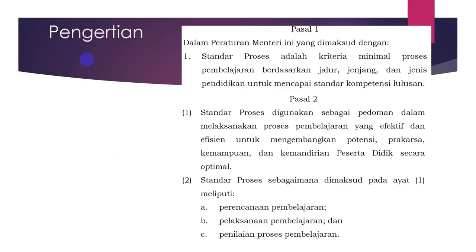Kita awali dengan pengertian. Apa pengertian standar proses? Yaitu kriteria minimal proses pembelajaran yang berdasarkan jalur, jenjang, dan jenis untuk mencapai standar kompetensi lulusan. Yang namanya standar itu pasti kriteria minimal, karena minimal itu berarti boleh lebih. Di standar isi itu juga kriteria minimal, standar penilaian juga kriteria minimal. Jadi namanya standar itu memang minimal, karena minimal itu boleh lebih dari yang ditentukan.